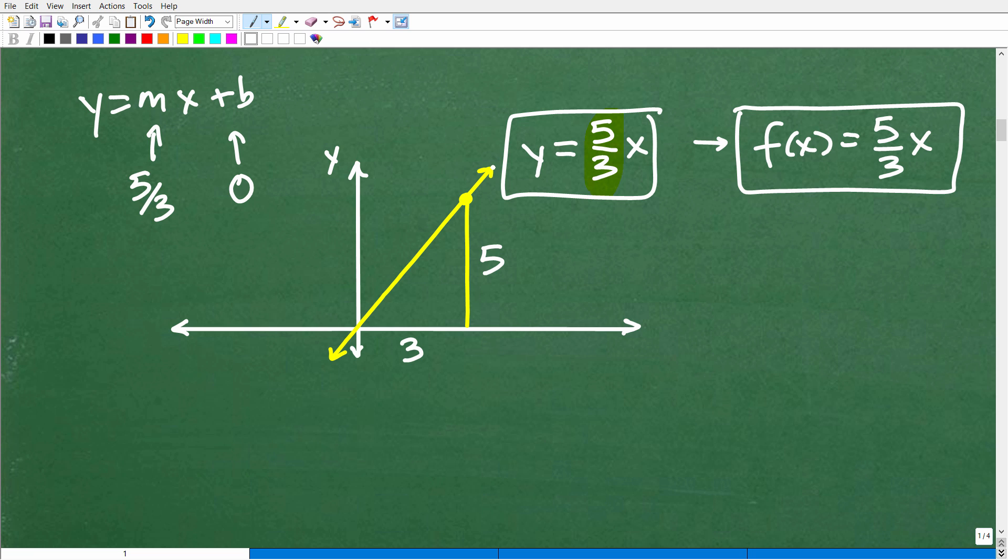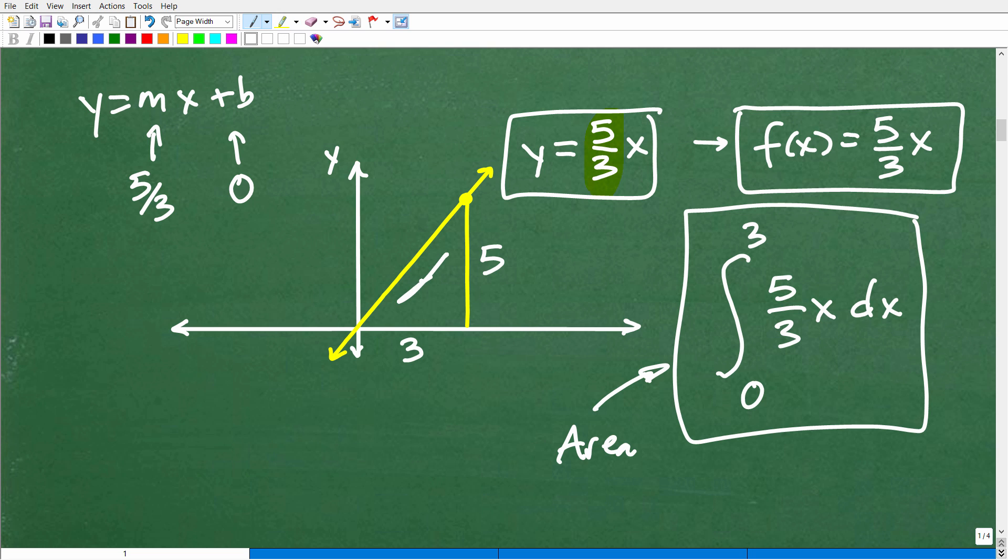Okay, now in calculus, this is the notation that we're going to use. We're going to write this little crazy thing like this. I'm going to explain this fully. Zero to three, five thirds x dx. So this little crazy notation right here is basically telling me to find the area of this triangle. Let me highlight this a little bit better. So this is saying this: find the area of that triangle. But let's just look at this crazy notation here because this is calculus. What does it mean?